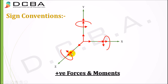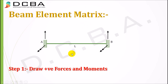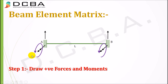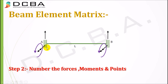For the beam element matrix, we consider two types of forces: a force in the y-direction and a moment in the z-direction. Only these two are considered while constructing a beam element matrix. The beam element has forces in the y-direction and moments along the z-axis, and the direction of the moments is anti-clockwise.